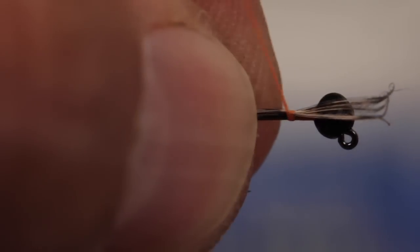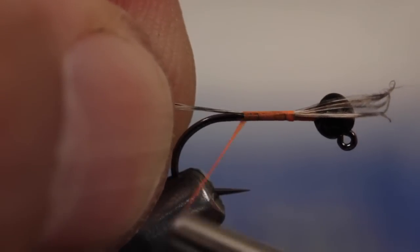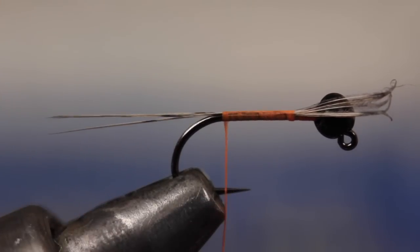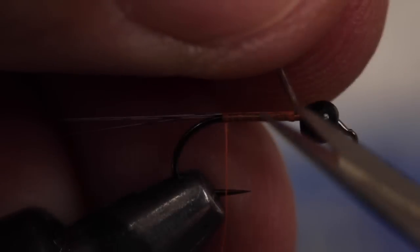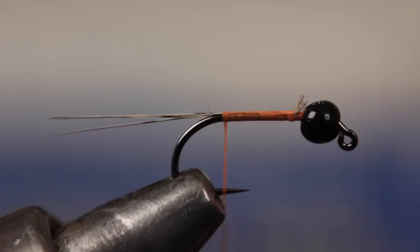Transfer that measurement rearward to the start of the bend and place the fibers directly on top of the hook shank. Take thread wraps to secure it. Angling the fibers up while wrapping will help ensure they stay on top of the shank. Continue wrapping all the way back to the bend. You can then lift the butt ends up and back and snip them off close.